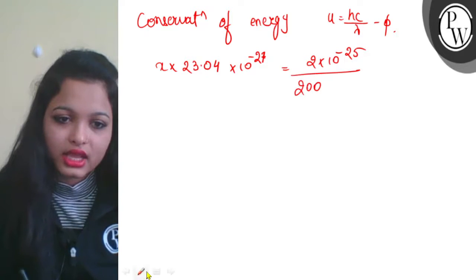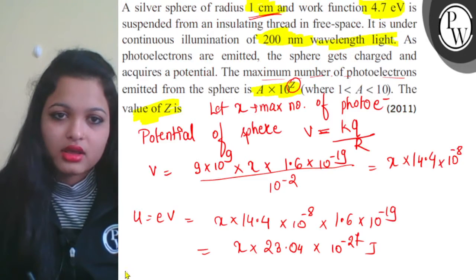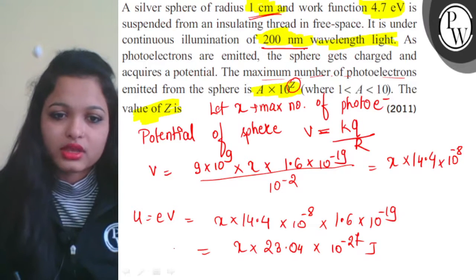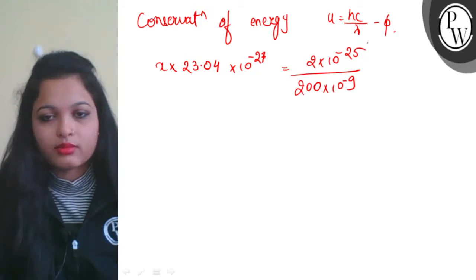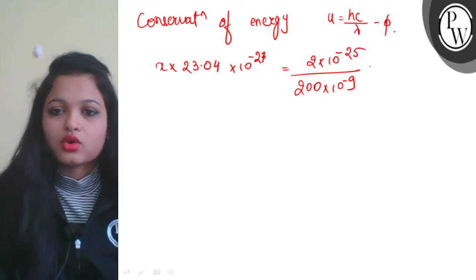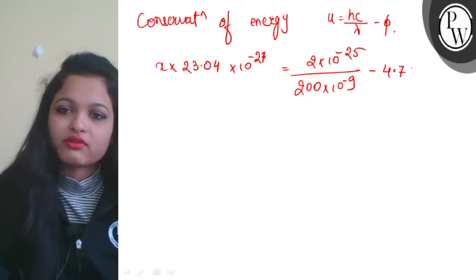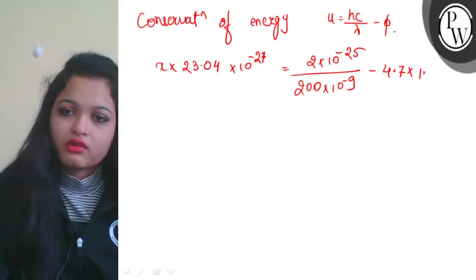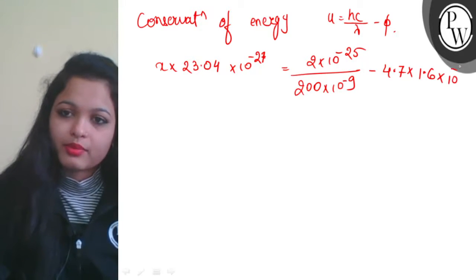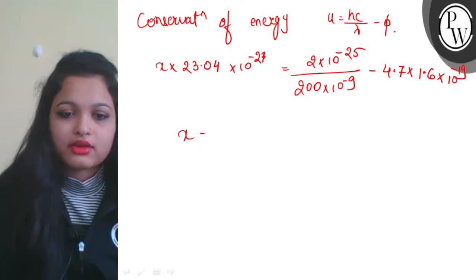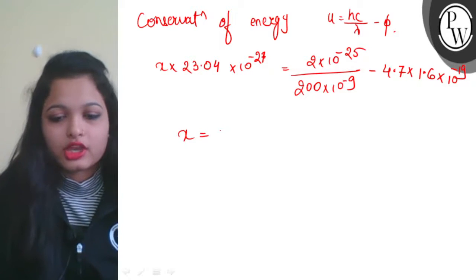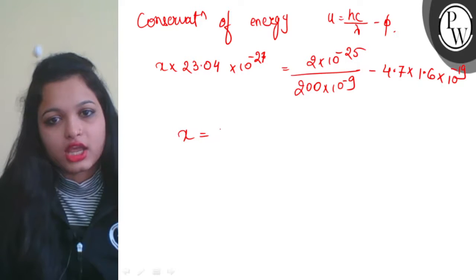Lambda was given as 200 nanometer. So substituting lambda = 200 × 10^-9 meters. And minus 4.7 × 1.6 × 10^-19 for the work function term. From here we calculate the value of x.